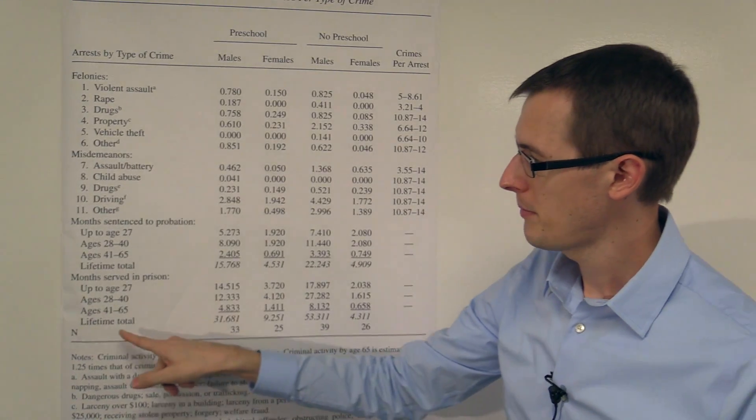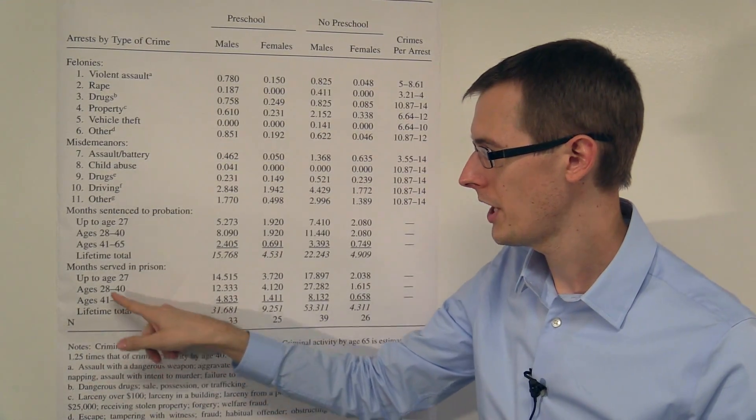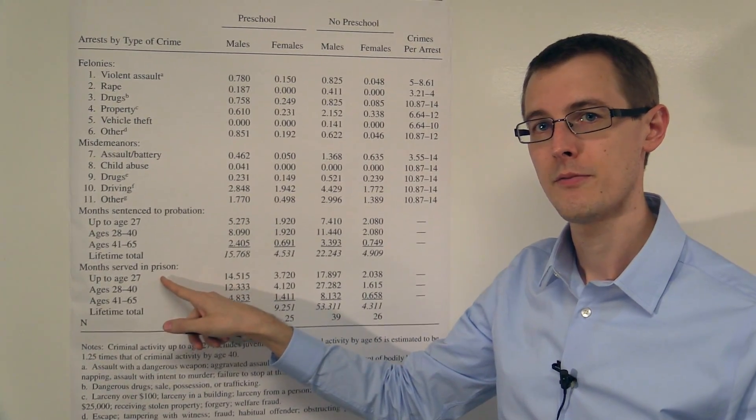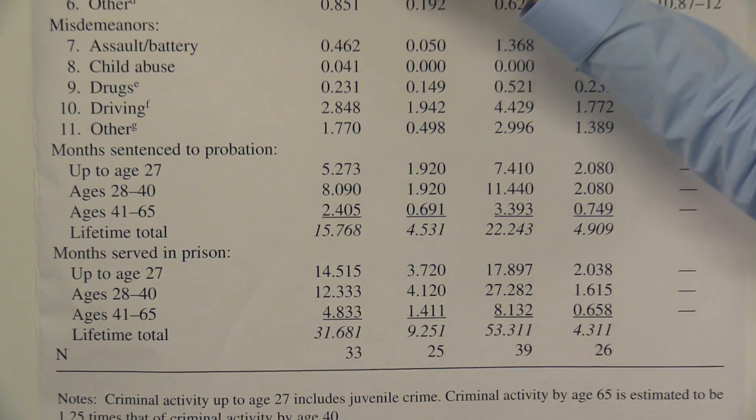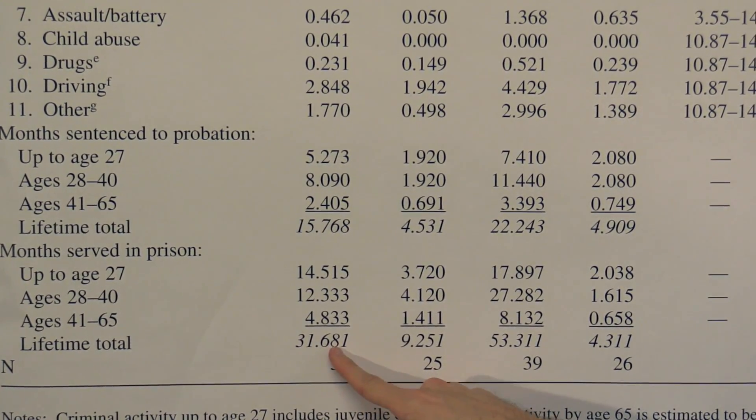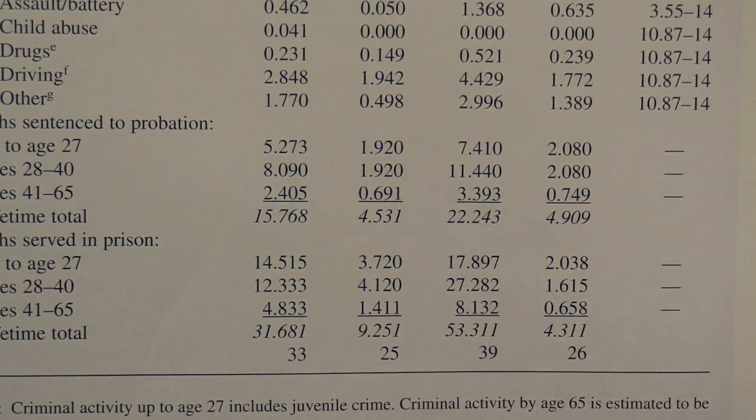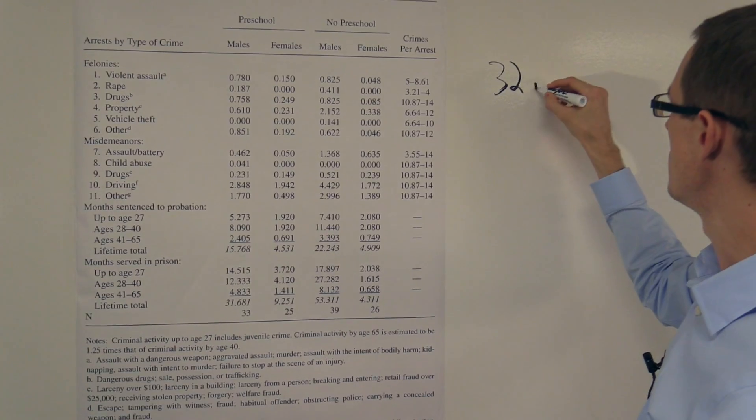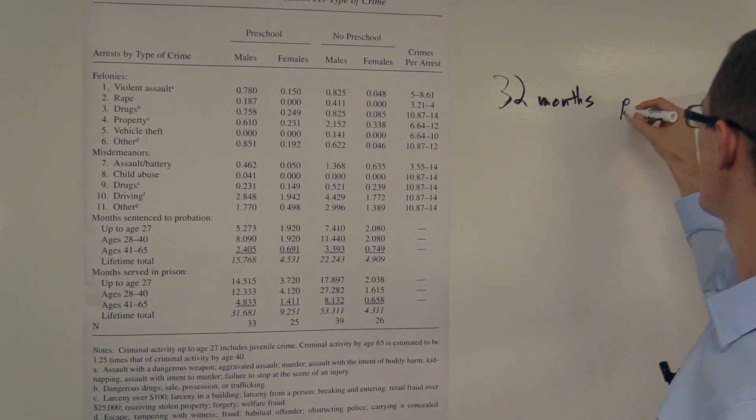So for example, let's compare the effect of going to preschool on the lifetime total number of months you've served in prison for males and for females. Let's start with males. So males who went to preschool got, on average, 32 months served in prison over their whole life. So that's 32 months for preschool.